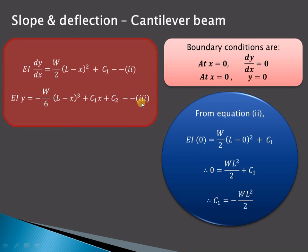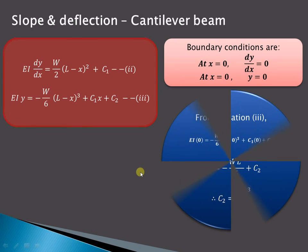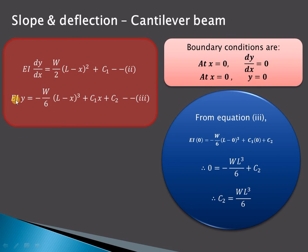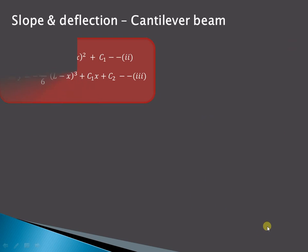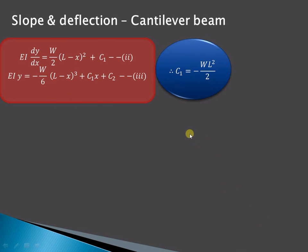Similarly, using the second boundary condition — at x equal to 0, y equal to 0 — and substituting into equation 3: EI·(0) equals minus W/6·(L)³ plus C2, so 0 equals minus WL³/6 plus C2, giving C2 equals WL³/6. We have now obtained C1 equals minus WL²/2 and C2 equals WL³/6, and we can substitute these values back into equations 2 and 3.